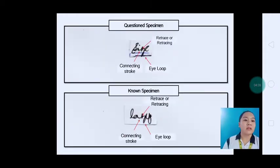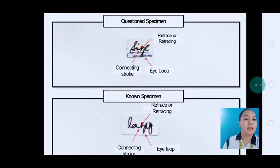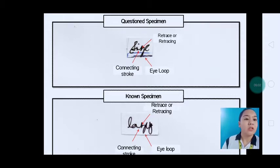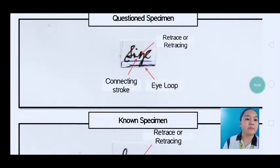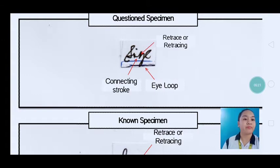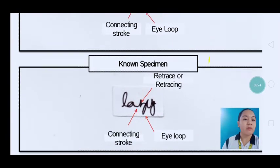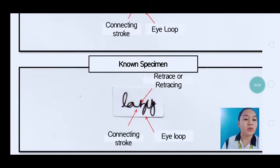The second set is the word 'size' in the questioned specimen and the word 'lazy' in the known specimen. Both are written in cursive writing. You can see the characteristics of letter Z. First is the connecting stroke of the questioned specimen — before the letter Z is written, it already manifests a connecting stroke, connecting with letter Z. The same characteristic appears in the known specimen, where letter A is connected with letter Z.